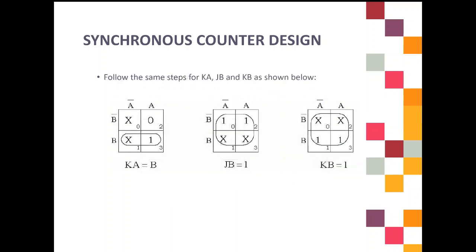You continue for KA, JB, and KB. For JB, in this K-map we have 1, 1, X, X — you can loop all values. That's why you get 1 as your simplified equation. Same goes with KB. So the expressions from the K-map are: JA = B, KA = B, JB = 1, KB = 1.